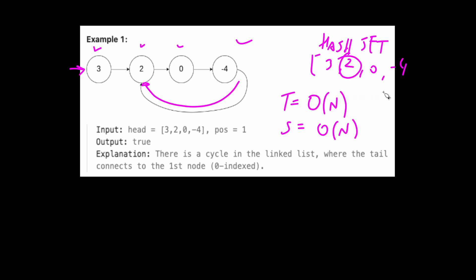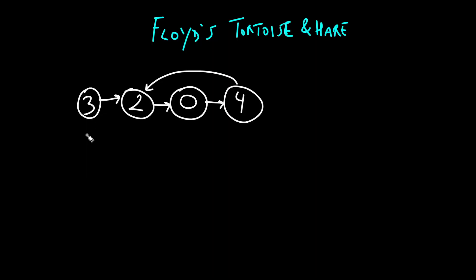There is a better solution for this problem, which is the one that you usually want to use during an interview. It's called Floyd's tortoise and hare algorithm. This algorithm works by using two pointers, a slow pointer and a fast pointer. So let me show you how this is going to work with an example.